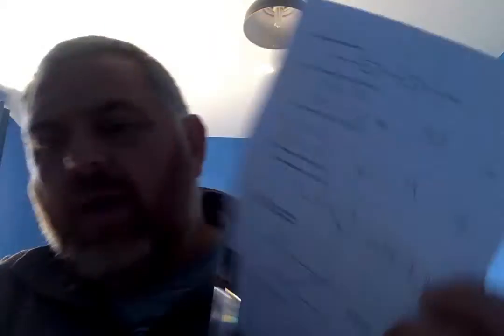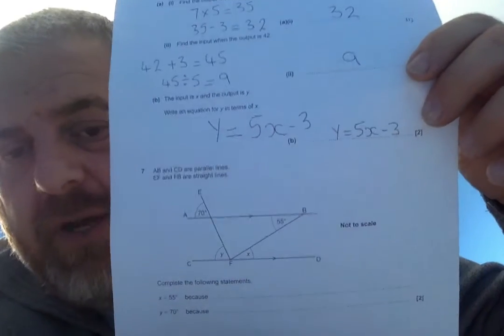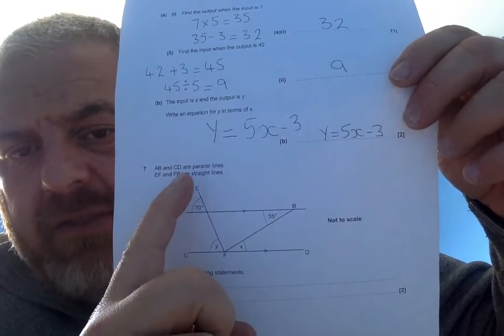That's a bit awkward to get your head around. But that's how we do it. And then the final question on this page is question 7 to do with angles. A, b and c, d are parallel lines.